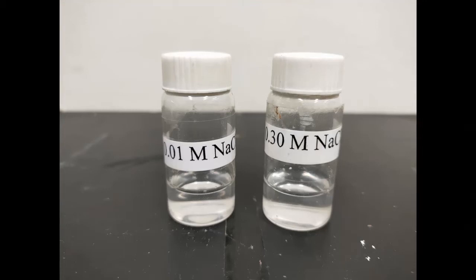For the responses of Tradescantia spathacea cells to solutions of different osmotic concentrations, the following materials are needed: 0.01 molar and 0.30 molar sodium chloride solutions.